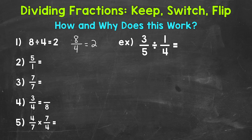So we need to know that fractions represent division. The second thing we need to understand is that anything over 1 — a denominator of 1 — equals itself. For example, 5 over 1 equals 5. So anything over 1 equals itself.